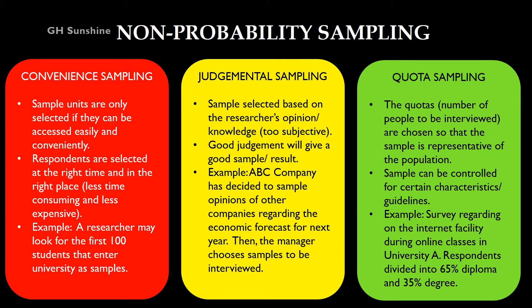The last non-probability sampling is quota sampling. The word quota means the number of people to be selected or interviewed. This is chosen by the researcher so that the sample becomes representative, but can be controlled for certain characteristics. For example, a survey on internet facility during online class — the researcher may choose 65% diploma students and 35% degree students as respondents.